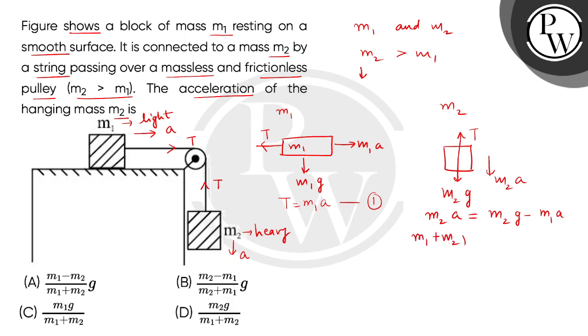M1 plus M2, and outside the bracket A equals M2G.